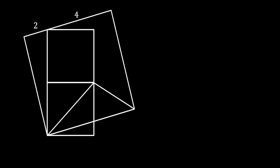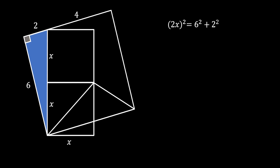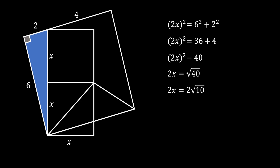We start by looking at the big tilted square. Its upper side is divided into segments of length two and four, so the side of this square must equal six. We label the sides of the two smaller squares as x. Looking at the blue right triangle, we apply the Pythagorean theorem: (2x)² = 6² + 2², giving 2x² = 40, so 2x = √40 = 2√10, meaning x = √10.